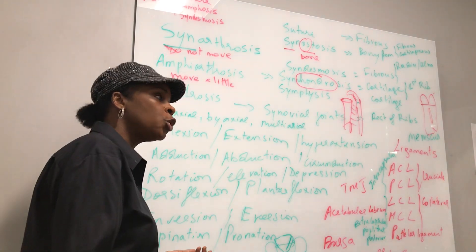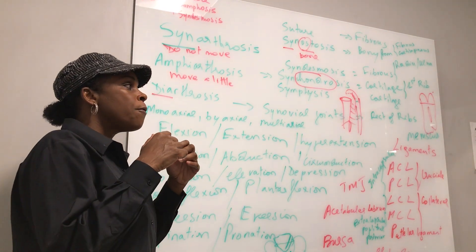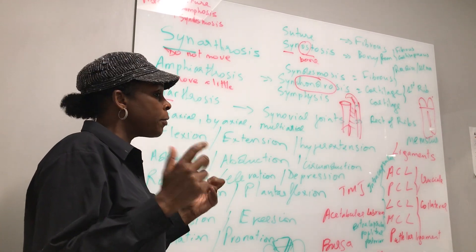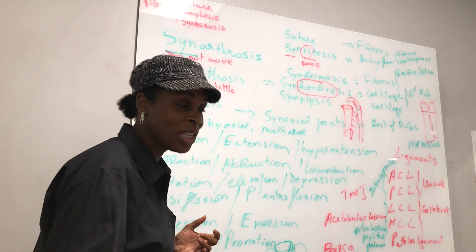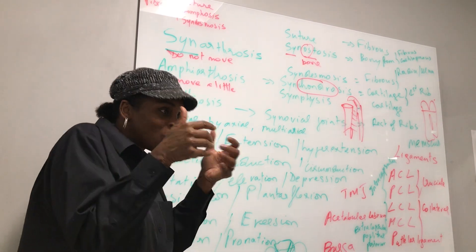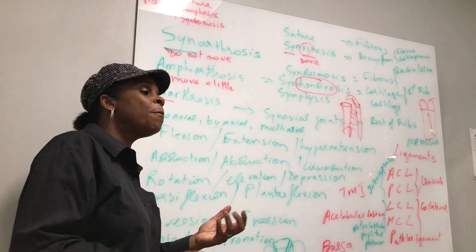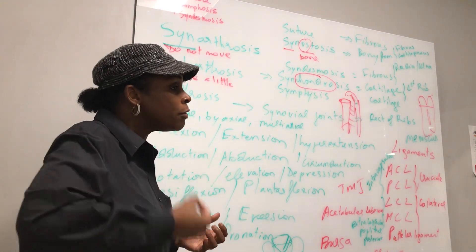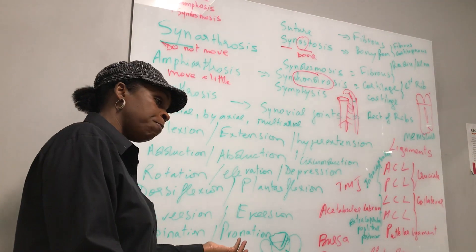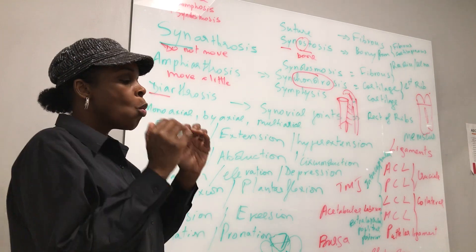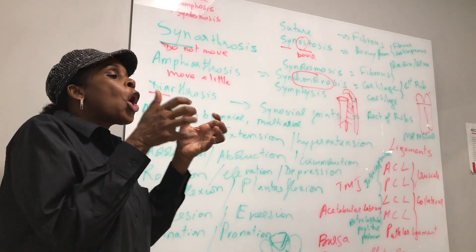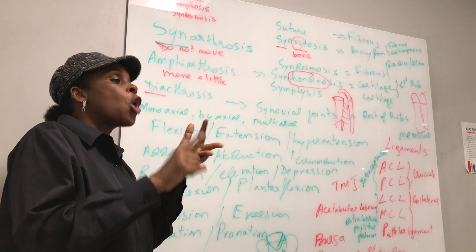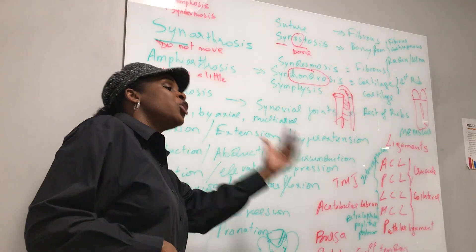Then we have a second joint where we have fiber between them — collagen fiber. It's not called collagen sewing bones together; we call that a fibrous joint, because there's fibrous connective tissue between them. Then the third one — we have cartilage between them. It's not bone, it's not fiber, it's cartilage. We call that a cartilaginous joint.